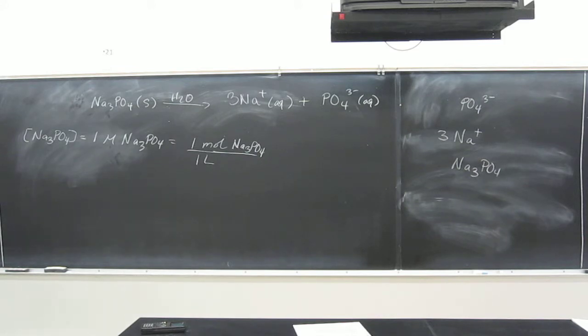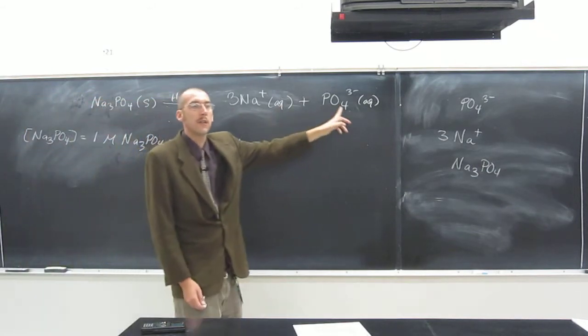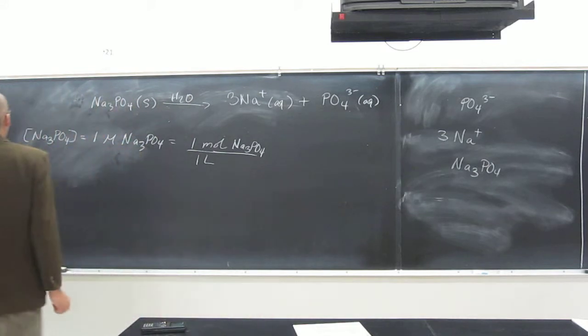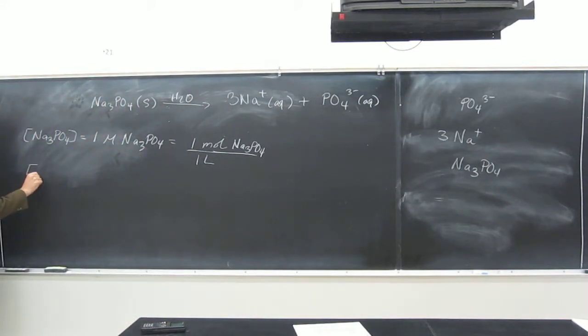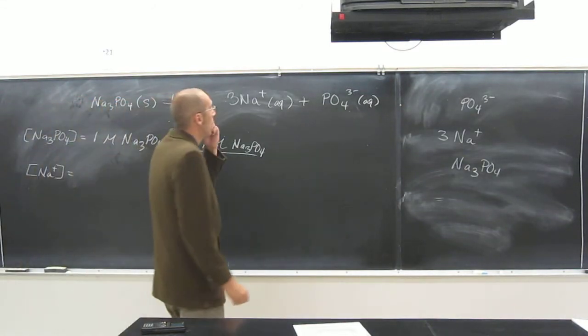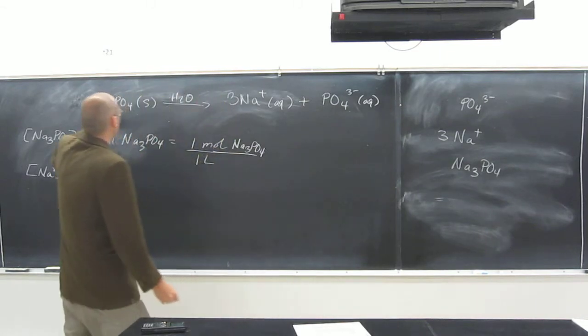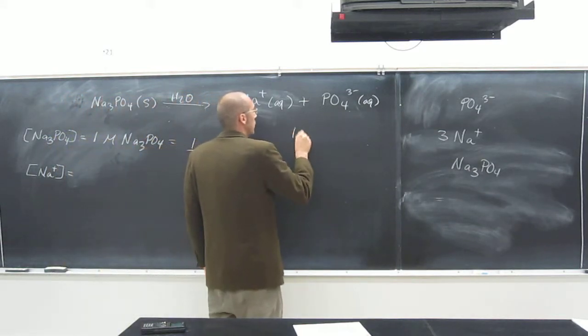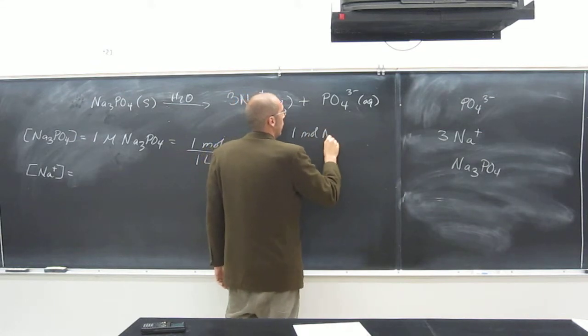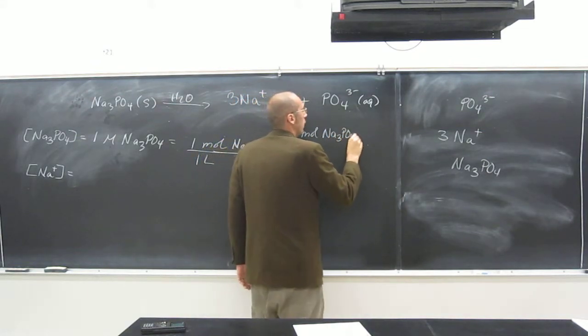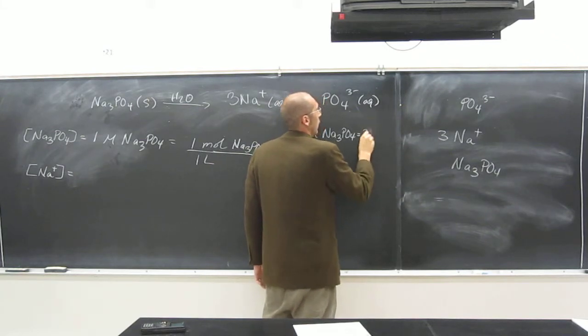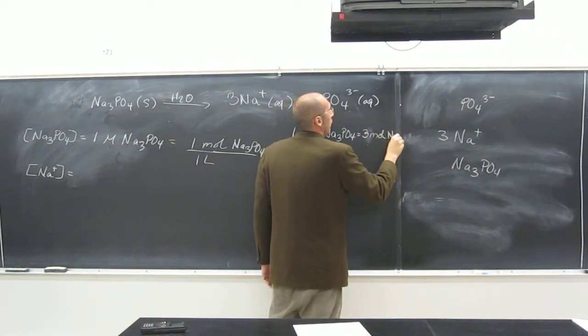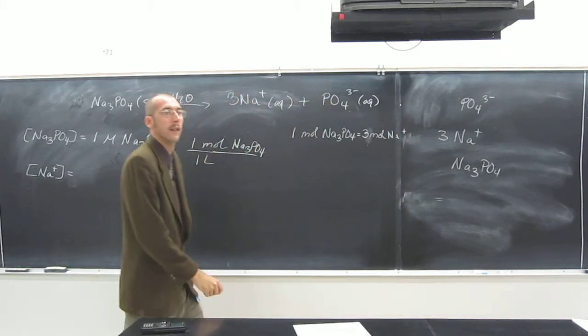So remember, the reaction equation itself gives us these conversion factors that we can use for this particular problem, right? So this problem was asking us, well, if we know the concentration of this, what's the concentration of this, and what's the concentration of this. So we have a conversion factor for every one sodium phosphate, we've got three sodiums, okay? So we can write this, so for every one mole of Na3PO4, that equals three moles of Na plus ions, okay?